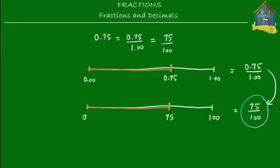Now all we have to do is simplify this fraction. Divide both the numerator and denominator by 5: 75 divided by 5 gives 15, and 100 divided by 5 gives 20. Simplify one more time by dividing by 5: 15 divided by 5 gives 3, and 20 divided by 5 gives 4. So the fraction simplifies to three quarters, or three fourths. The decimal number 0.75 equals the fraction three quarters. That's how you convert decimals to fractions.